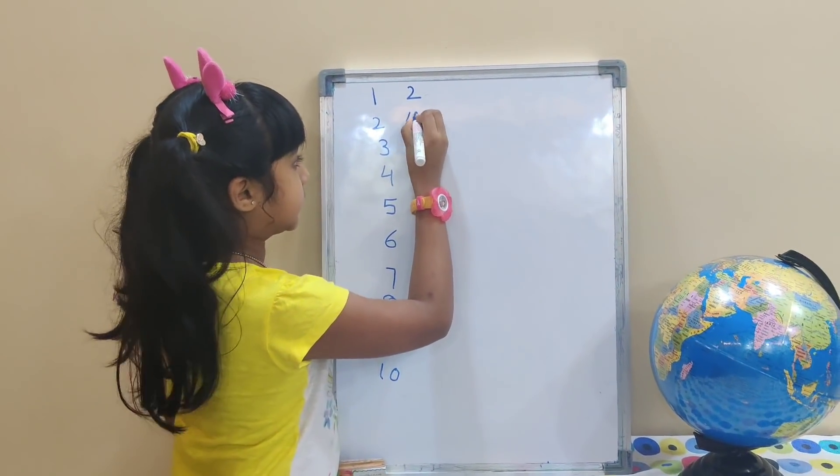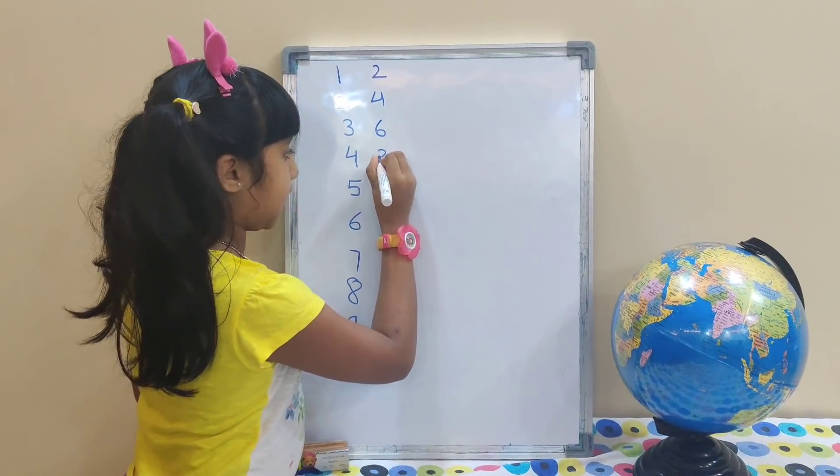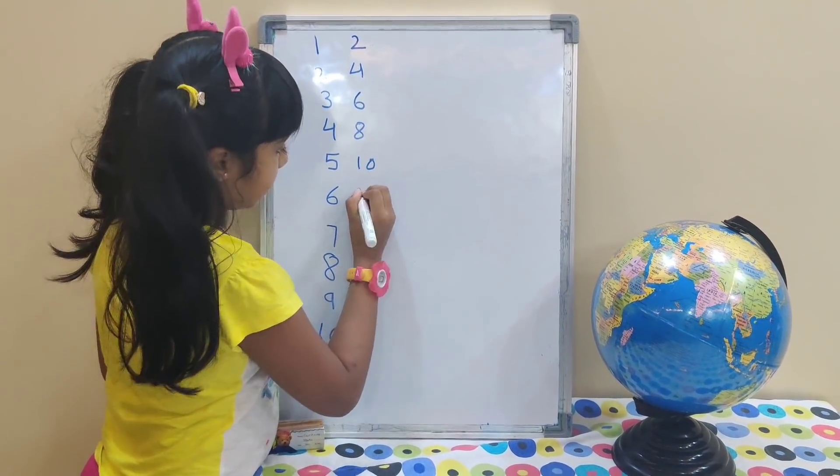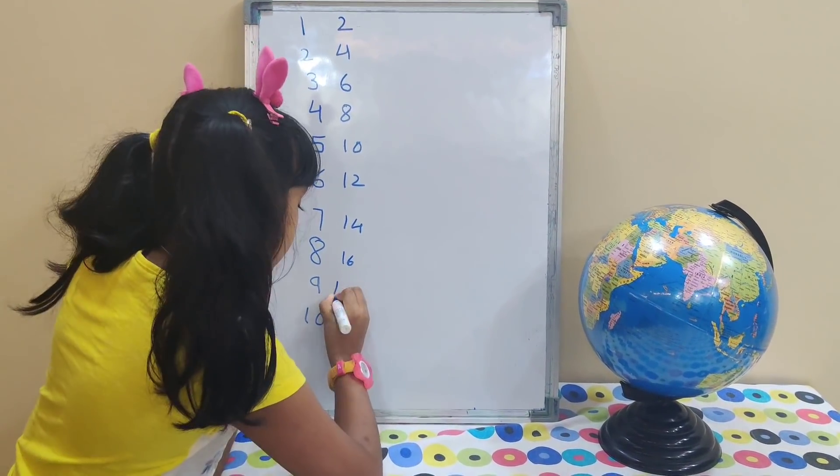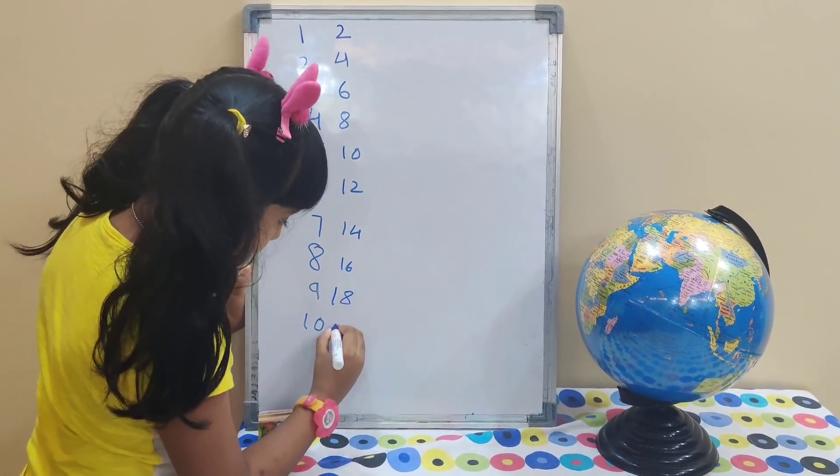2 1's are 2, 2 2's are 4, 2 3's are 6, 2 4's are 8, 2 5's are 10, 2 6's are 12, 2 7's are 14, 2 8's are 16, 2 9's are 18, 2 10's are 20.